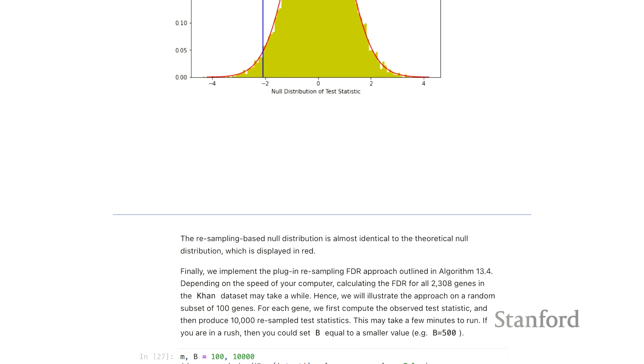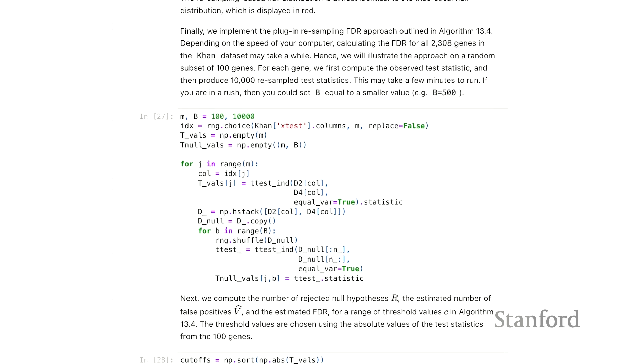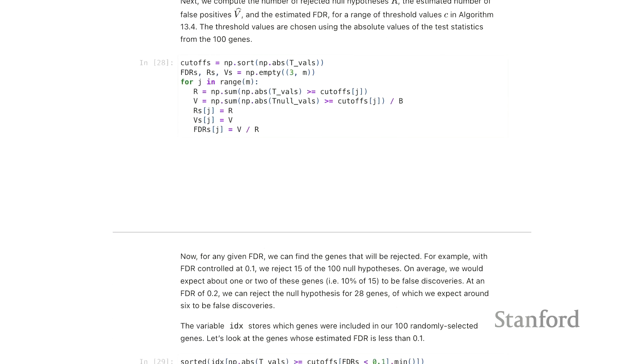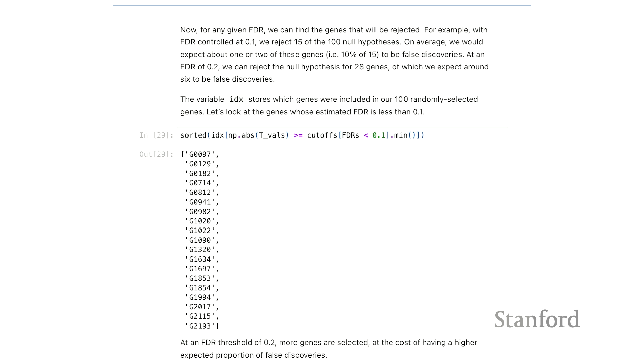So the remainder of the lab shows how to use these p-values to do false discovery rate analysis, or the Benjamini-Hochberg procedure on these p-values. But what's really happening is we're just using this procedure to construct new p-values, and then running Benjamini-Hochberg on those.